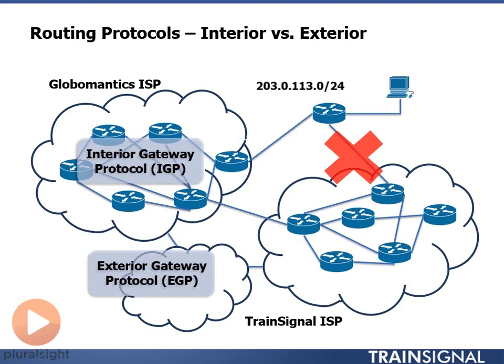Within the company you work for, you're going to use an Interior Gateway Protocol. I worked at a large hospital in Madison, Wisconsin, and we used the OSPF Interior Gateway Protocol as well as the EIGRP Interior Gateway Protocol, as well as static routes. We actually used two Interior Gateway Protocols and static routes to accommodate our routing environment, but we did not use an Exterior Gateway Protocol because we only had one internet service provider. That's really the focus of the routing protocols in this course.